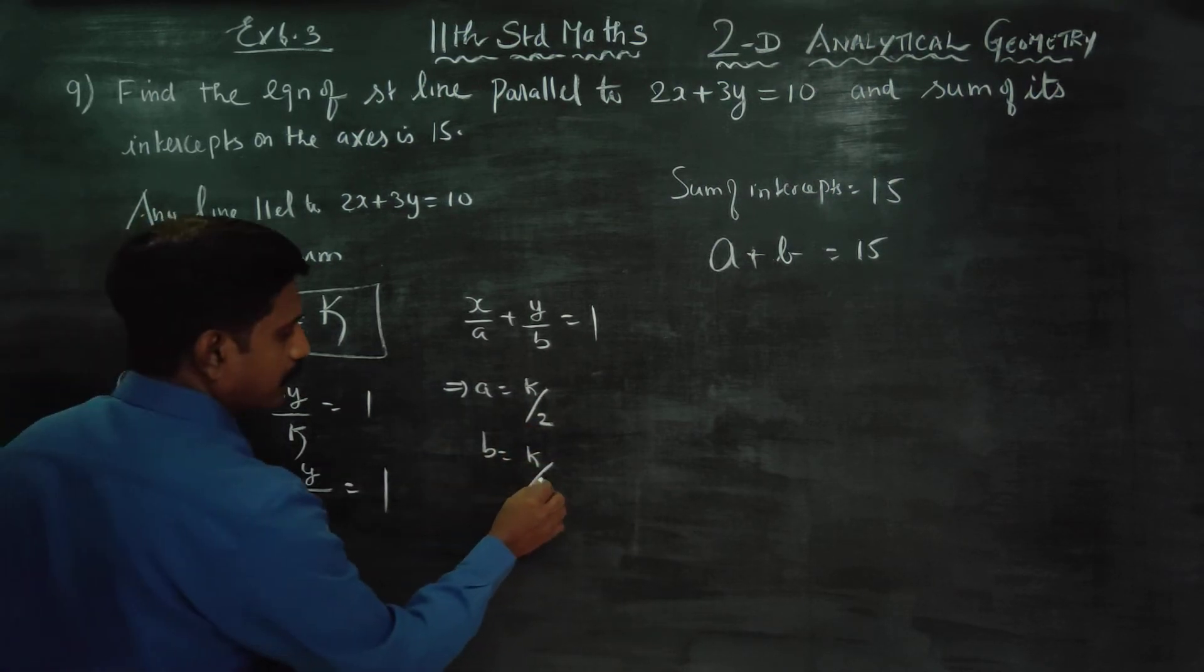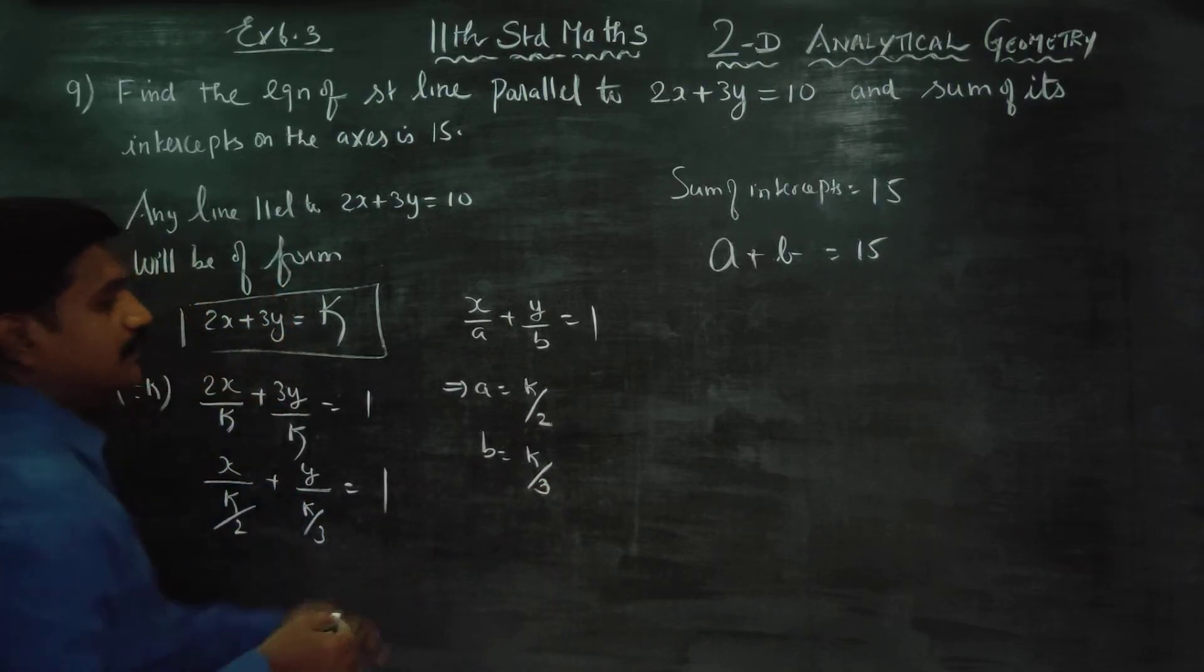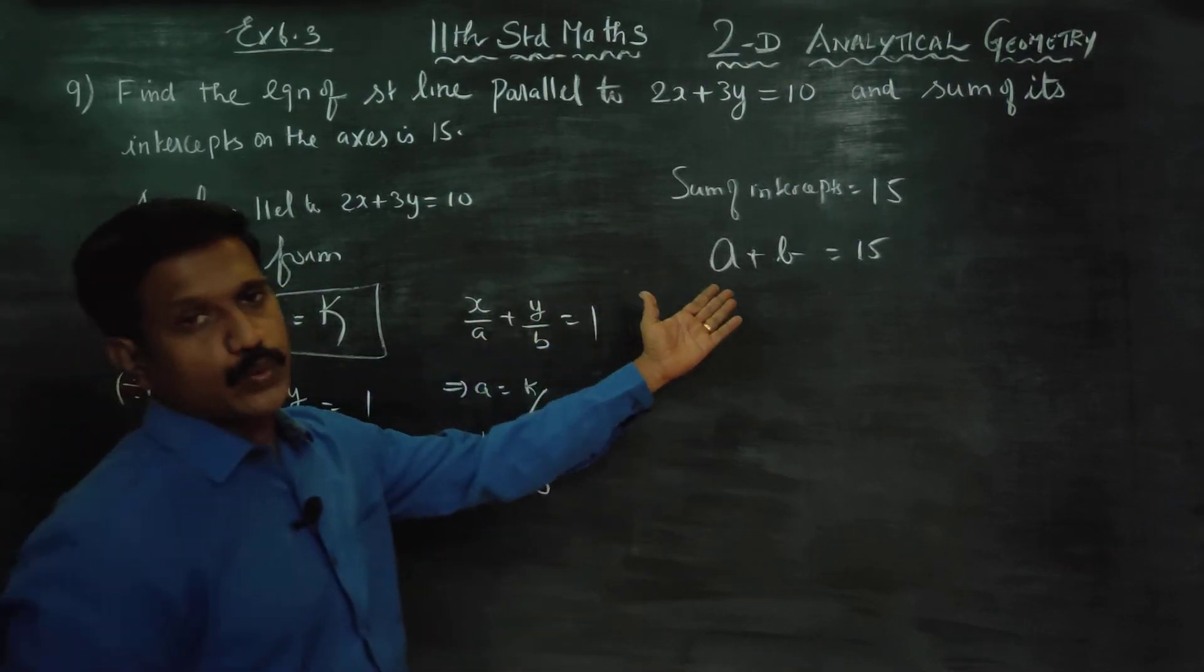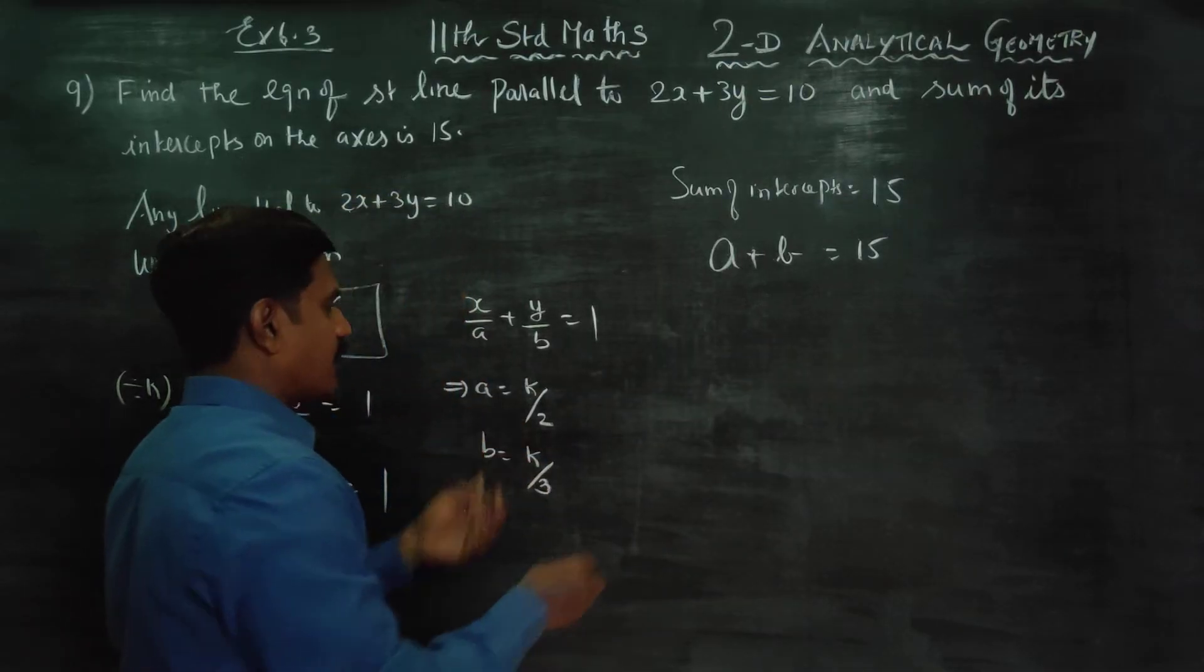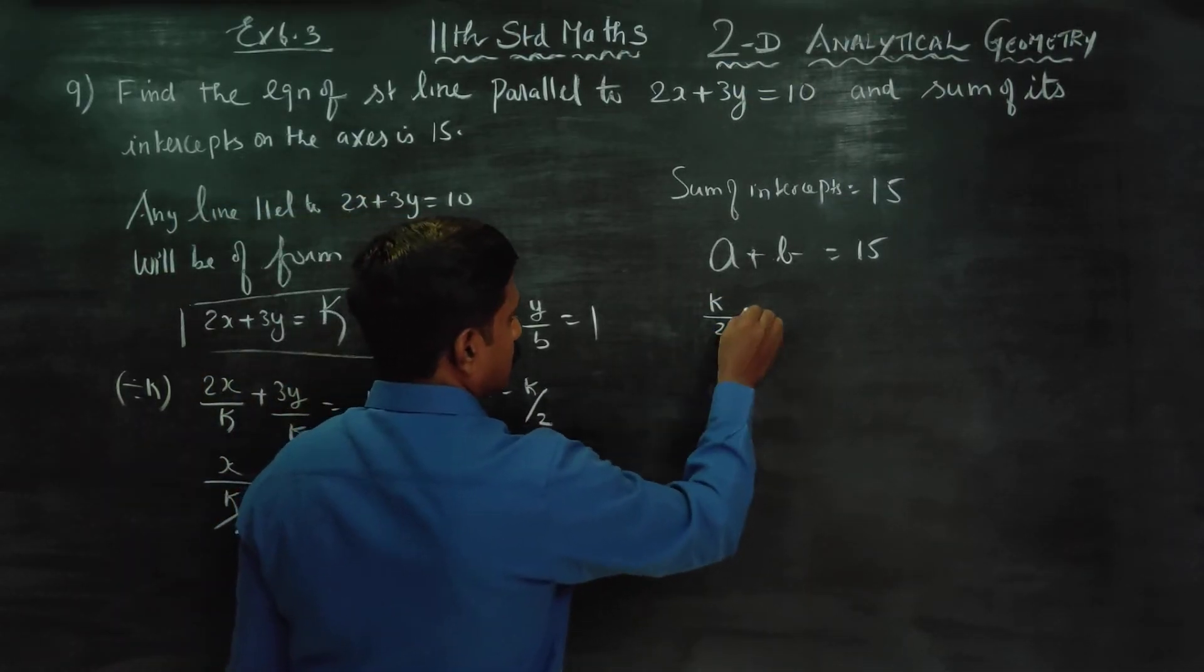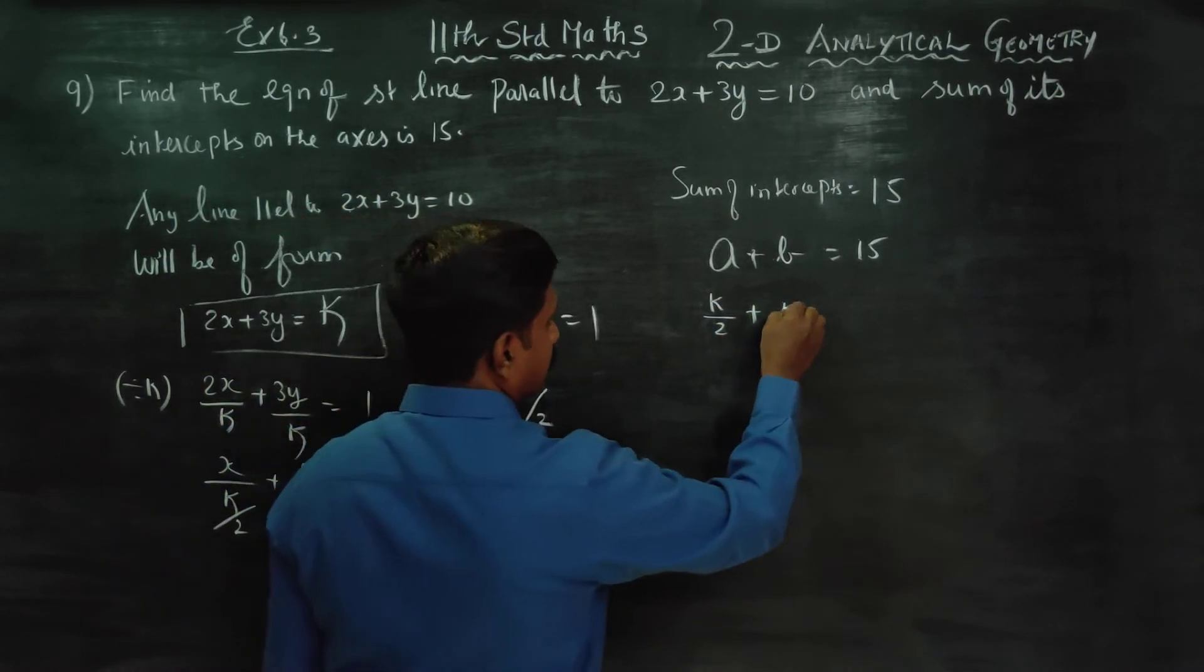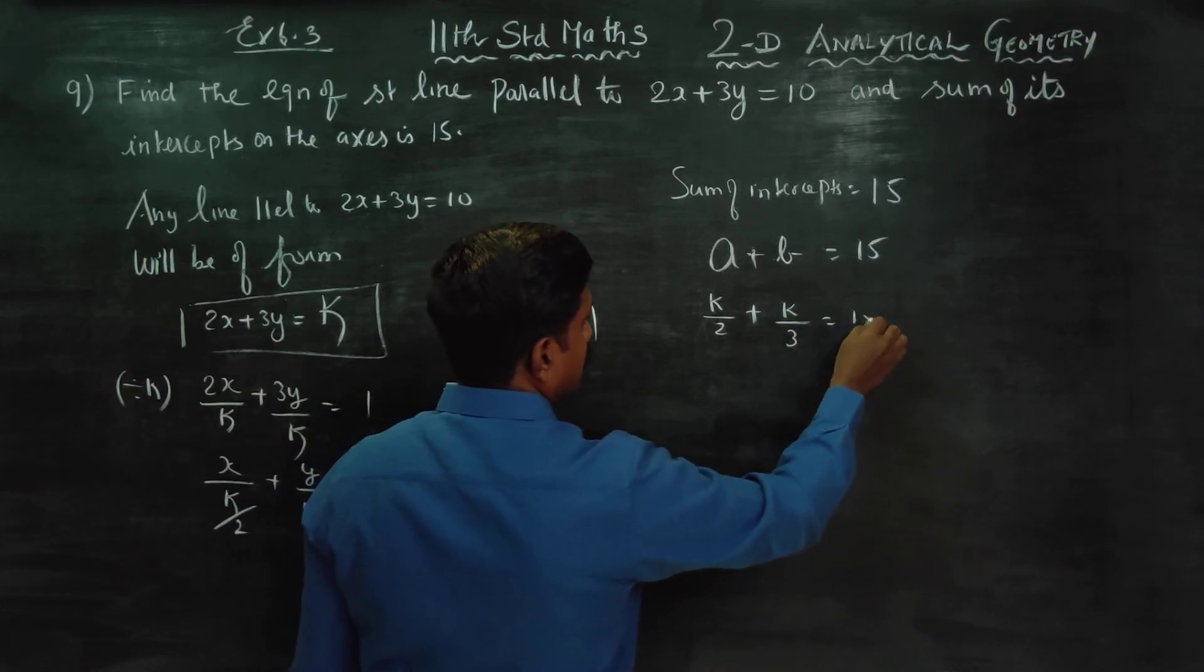Now a is ready, b is ready, this is the key. Sum of the intercepts is 15, so a plus b equals 15. Therefore k by 2 plus k by 3 equals 15.